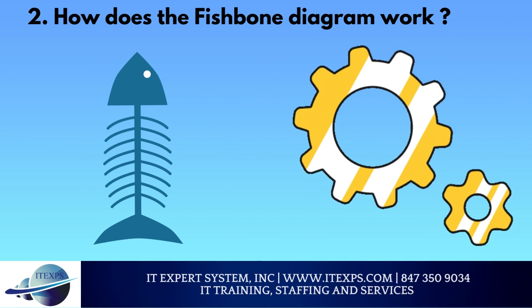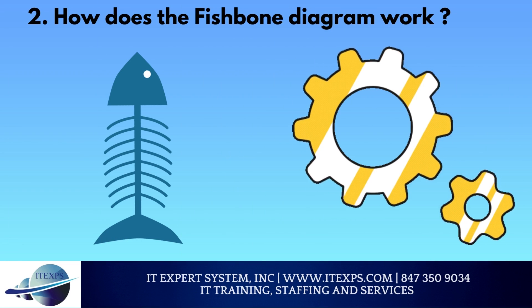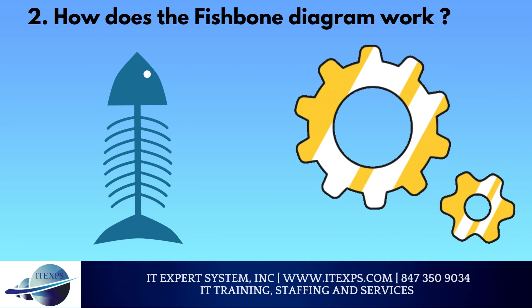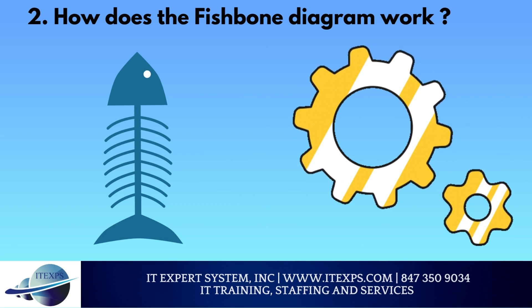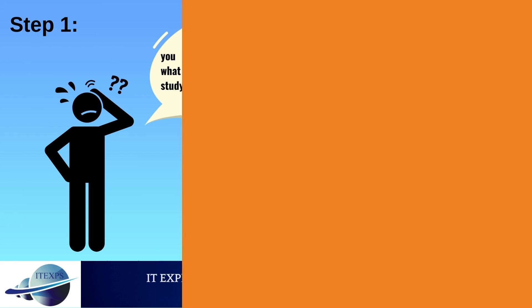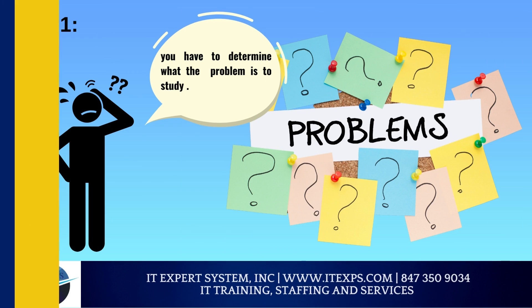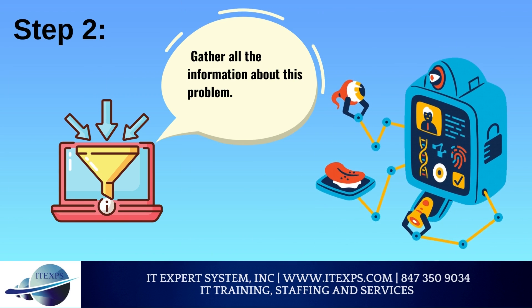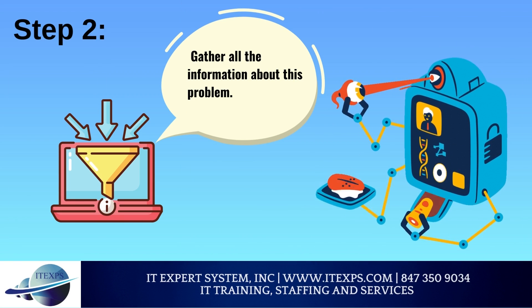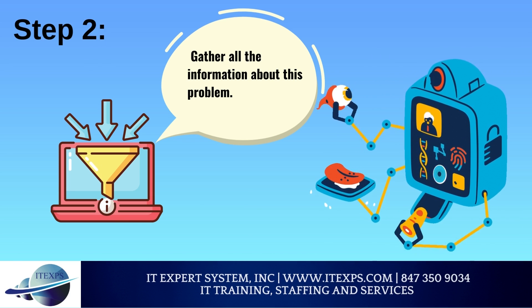How to make an Ishikawa Diagram? To start developing your Ishikawa Diagram, you will need a paper, a pen, and follow the steps below. Step 1: First of all, you have to determine what the effect or problem is to study. Step 2: With the determined effect, you have to gather all the information about this problem, and this will be the basis for the next step.